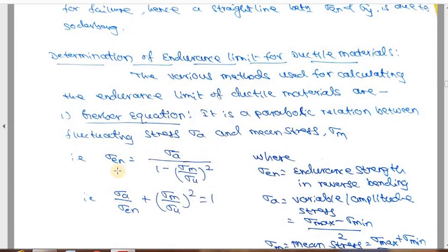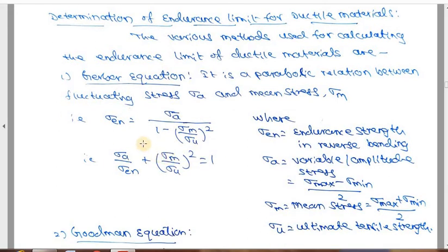Determination of the modified endurance limit involves various methods shown in research papers. There are empirical relations for determining the endurance limit of a material — no derivations are available for these; one has to remember these empirical relations. All these relations are available in the design data handbook.